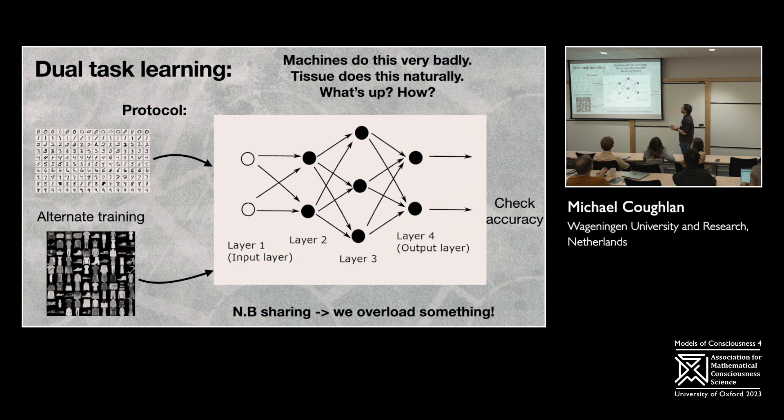And people can ask me about that later. So in terms of outlook and next step and conclusions, basically, the outlook is to continue with more biology and see what we can learn from these very simple models. And the impact would be that work on relearning in simple brains reveals some emergent phenomena and principles that we could test, and that eventually, if we do enough of that, we might be able to converge on an understanding of consciousness from the biological point of view, as well as all of the other directions that we're discussing at the conference. And with that, I'll wrap up.